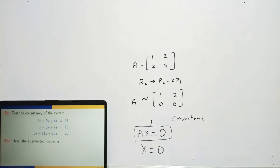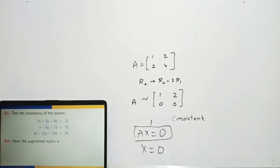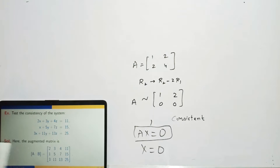Let's see a problem: test the consistency of the given system. First, write the augmented matrix: [2, 3, 4 | 11; 1, 5, 7 | 15; 3, 11, 13 | 25]. To find the rank of [A|B], convert to REF. It's good to make 1 at the first position, so interchange the first two rows. Now with 1 at the top, make zeros in the first column using the first row.